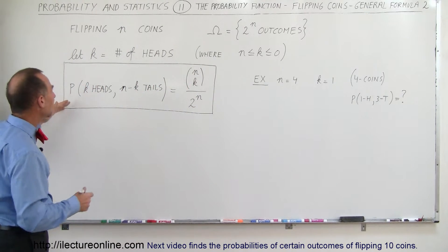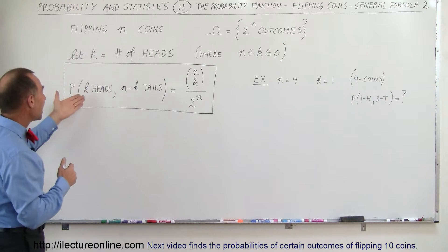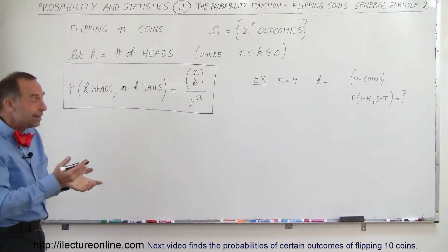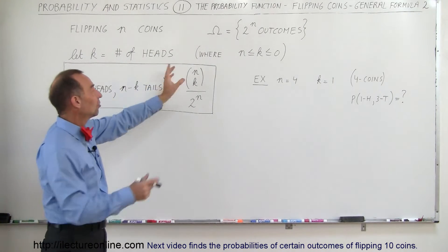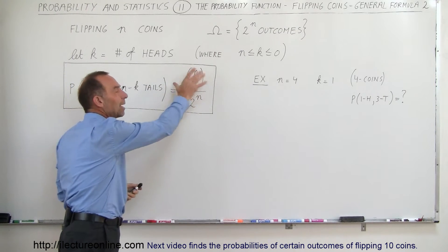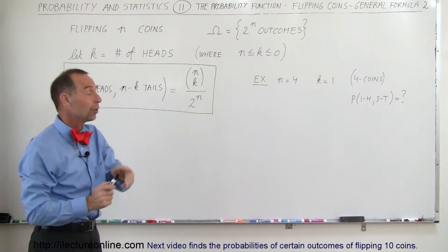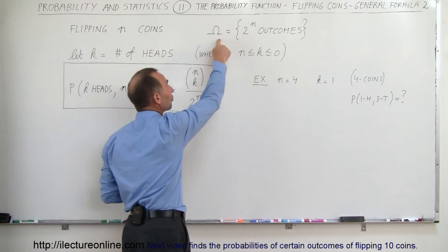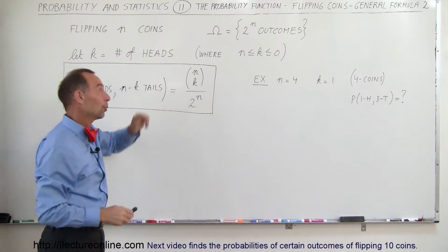And the probability of any sort of event happening, let's say k heads and n minus k tails, where k can be any number from zero to n, the probability is going to be this symbolism n over k, whatever that means, divided by 2 to the n power. Remember, 2 to the n power is the total number of outcomes from the sample space, and that's going to be a number in the denominator. The question is, what is this in the numerator?